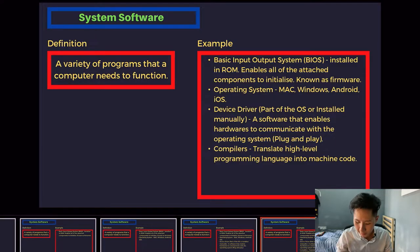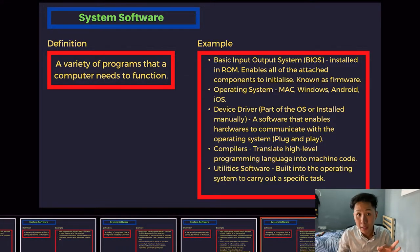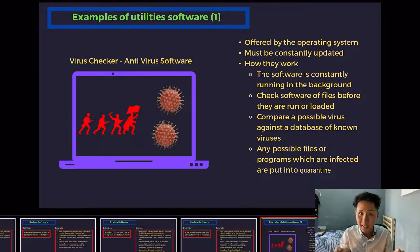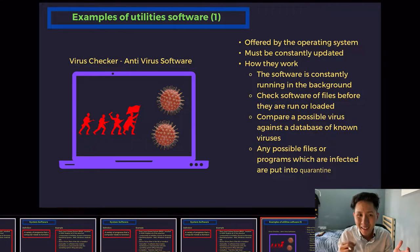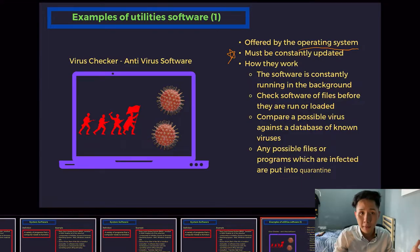Device drivers are code written to enable hardware to communicate with the operating system. Compilers translate high level programming language into machine code — we'll look more into that in the following subtopics. Utility software is usually built into the OS to carry out a specific task. The first example is antivirus software. It protects against viruses that try to attack the computer and must be constantly updated, because viruses keep evolving and hackers keep improving them.